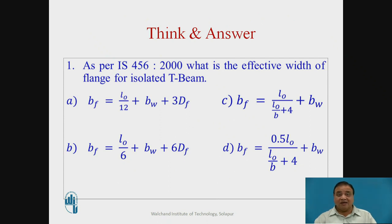So kindly think and answer. So here I have given as per the provision IS 456, the effective width of the flange you have to select from the four options given over there. I feel you have already ticked it. The answer will be the B option that is BF is equal to L0 by 6 plus BW plus 6DF.